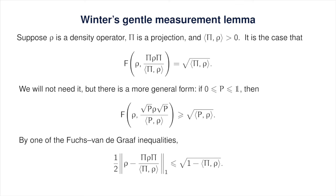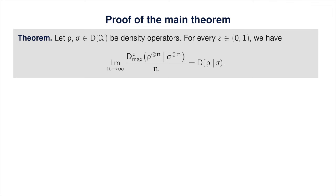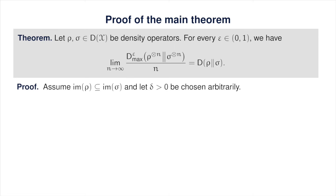Finally, we're ready to prove the main theorem. The theorem is completely trivial when the image of rho is not contained in the image of sigma, as both expressions in the equation become positive infinity in that case. So we'll assume throughout the proof that the image of rho is contained in the image of sigma. We also take delta to be an arbitrarily chosen positive real number — the fact that delta is arbitrary will be exploited later, as it could be as small as we need. We first apply the key lemma, which implies that for every positive integer n there exists a projection operator pi sub n satisfying three properties, with k and mu being positive real numbers depending on rho and sigma but not on n.